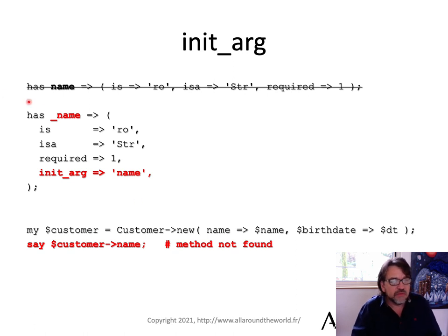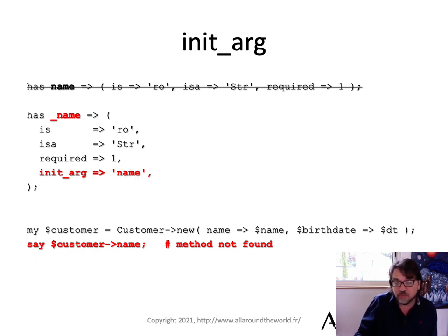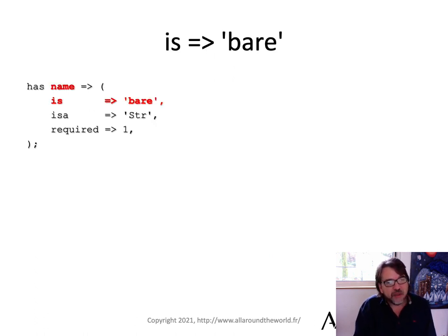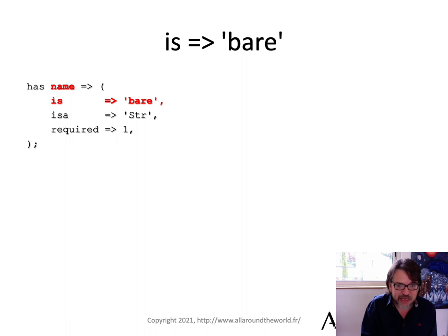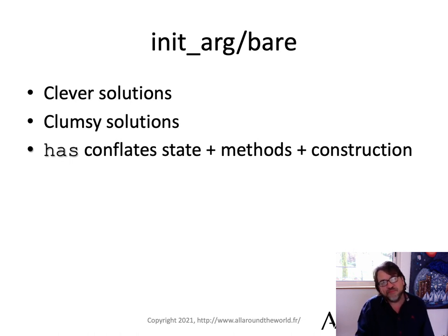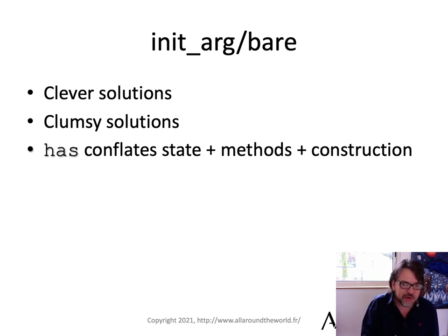One way to handle that is to declare 'has _name' and then pass in an init_arg of 'name', which means if you try to call customer->name it'll blow up. But sooner or later someone's going to call it with the underscore. We don't have truly private methods with this system. Or you can say it's bare — no methods associated with it — so you can pass 'name' to the constructor but can't call a name method. But then getting the value out of there is a pain, and nobody actually does that. So init_arg and bare are kind of clever but ugly solutions. This is partially because Perl syntax does not allow 'has' to separate things — it conflates too many things together. Cor attempts to break that.